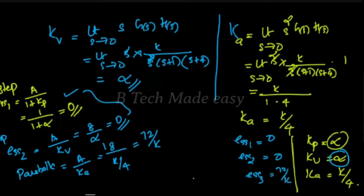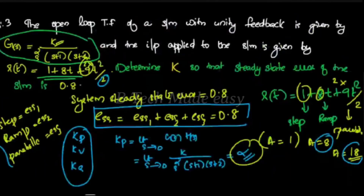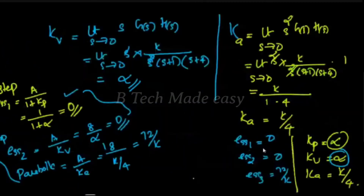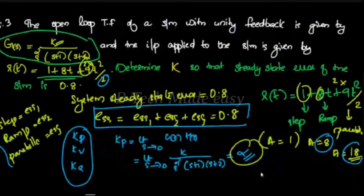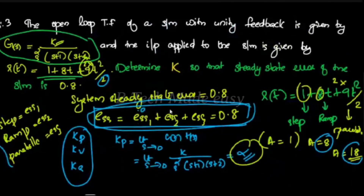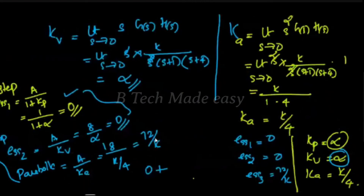Now we add the values. The total ESS equals ESS1 plus ESS2 plus ESS3. ESS1 is 0, ESS2 is 0, and ESS3 is 72 divided by K. So the total ESS is 72 divided by K.